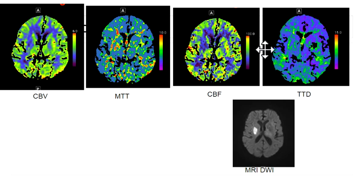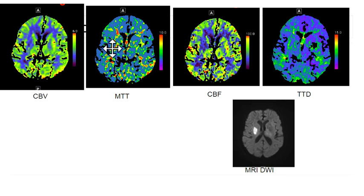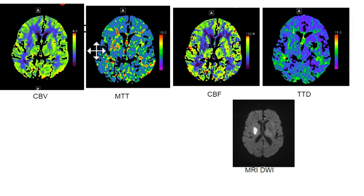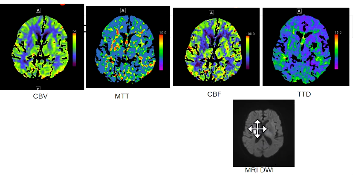If you look at all four images to find the defect, it's kind of hard to find. You might not notice it, but if you look carefully on the CBV images, the right putamen is down compared to the left. There's actually a defect in the right putamen on the CBV, and then you can notice it's a little elevated on MTT, down on cerebral blood flow, and maybe a little prolonged on the TTD. Comparing CBV to MTT, this is a matched defect in that right putamen, consistent with a core infarct with no potentially reversible surrounding ischemia. That corresponded to the follow-up MRI DWI sequence showing the completed infarct in the putamen.